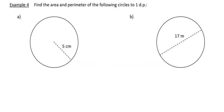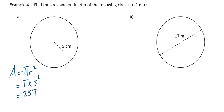This example says find the area and perimeter of the following circles to 1 dp. You'll need your calculator to do this. For the first one, area - remember the formula is πR². So in this case it's pi times 5 squared. If you do that on your calculator it will come out as 25π. Then press your SD button - pi times 5 squared, press SD - to 1 dp you will get 78.5. The units will be centimeters squared, to 1 dp.